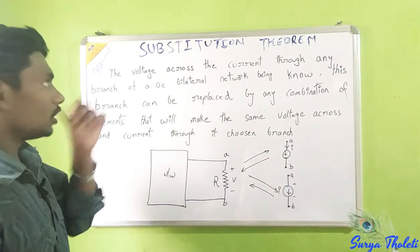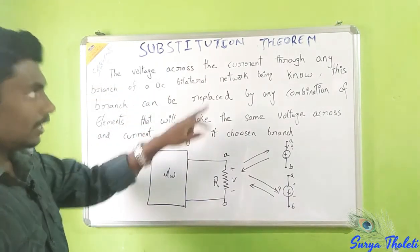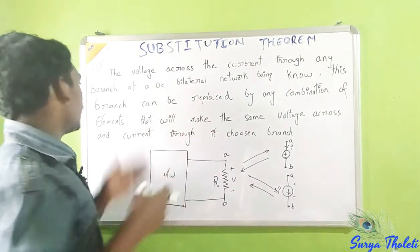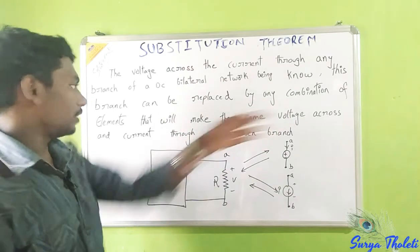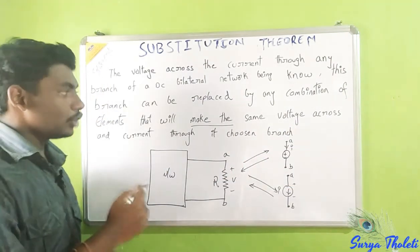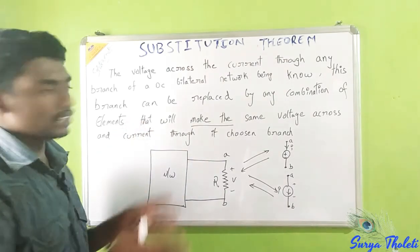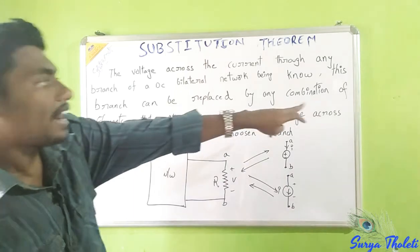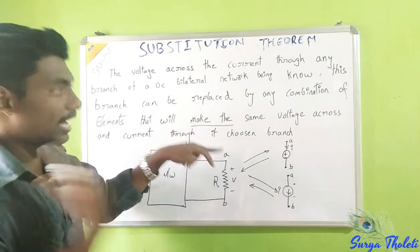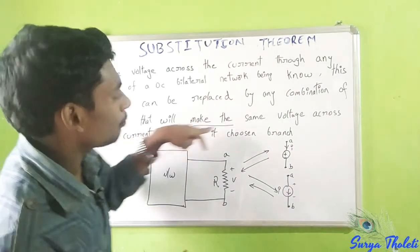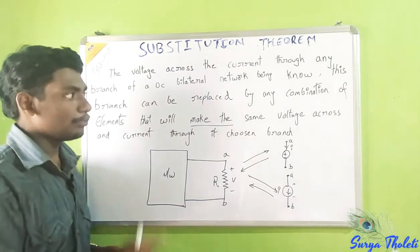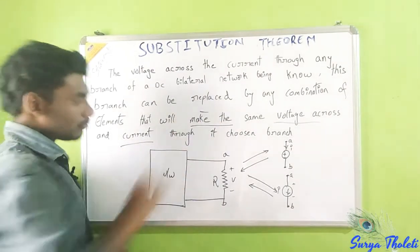It is a substitution. Let's start the topic. The voltage across and current through any branch of a DC bilateral network — this branch can be replaced by any combination of elements that will make the same voltage across and current through the chosen branch.